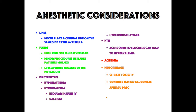Treatment of hyperkalemia includes regular insulin, calcium, bicarbonate, and beta-agonists like albuterol. Insulin drives intracellular uptake of potassium and is usually administered with dextrose. Calcium gluconate does not affect serum potassium levels but stabilizes the myocardium and prevents arrhythmia. Sodium bicarbonate helps drive potassium intracellularly, following the rule that potassium follows the hydrogen ion.